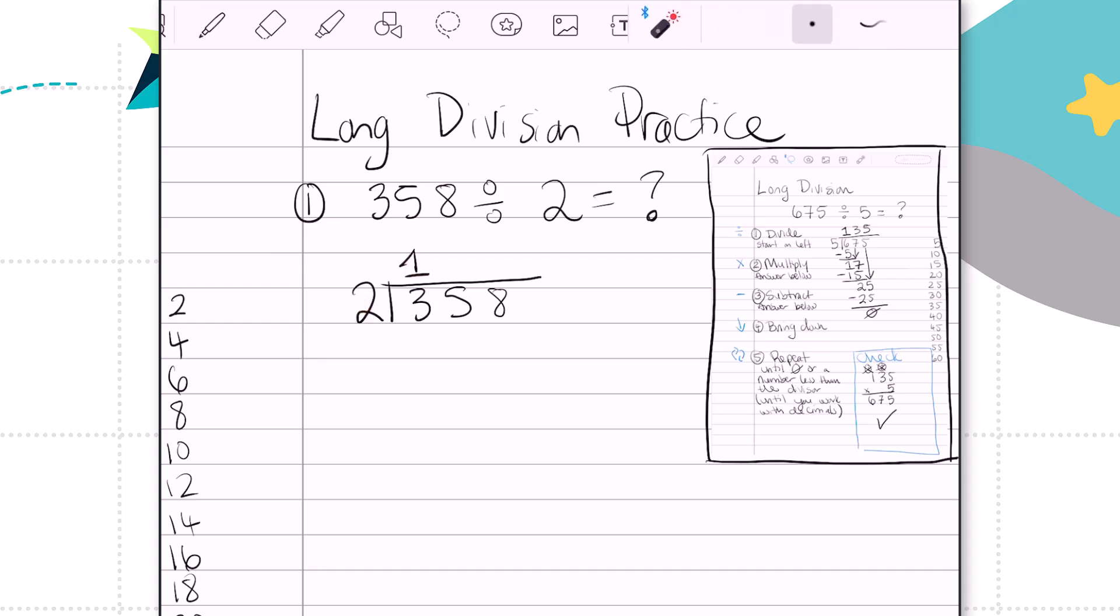Then I'm going to multiply 1 times 2. 1 times 2 is 2. I'll place that underneath the 3. And then my next step is to subtract 3 minus 2 is 1. Then we bring it on down. I'm going to bring down the 5. And that gives us 15. Now we repeat.